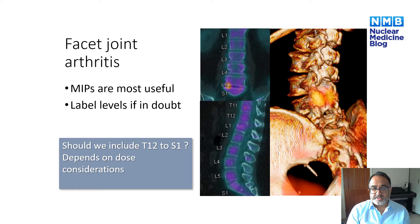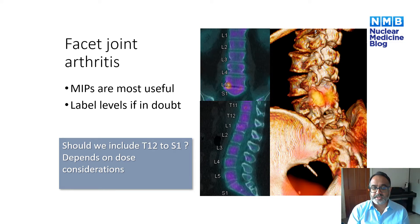When deciding which joints to target on the SPECT CT, I find that the MIP images — the maximum intensity projection images — are the most useful. As a general rule of thumb, it's quite useful to label the levels, as we've done here on these images, so that avoids any doubt as to which level you're talking about when writing the report.